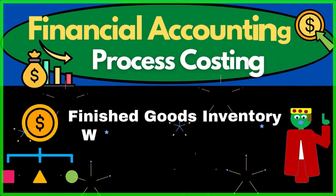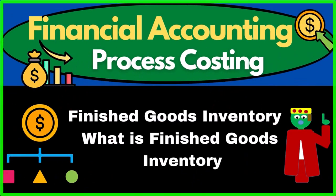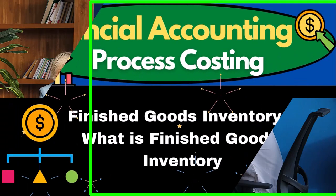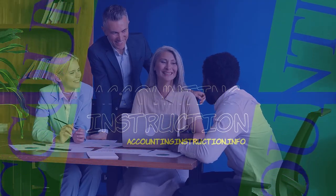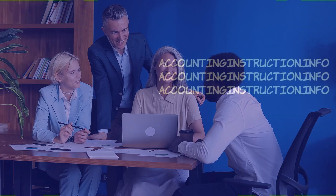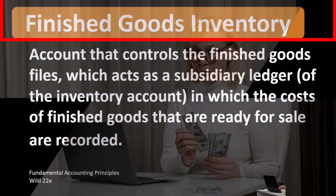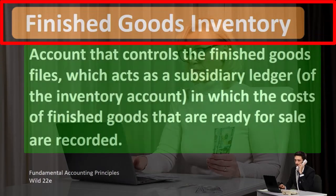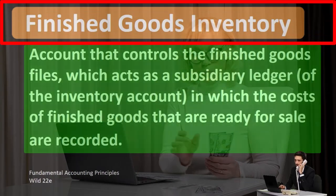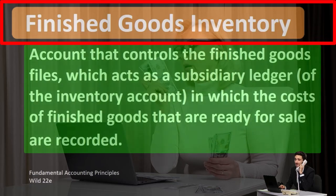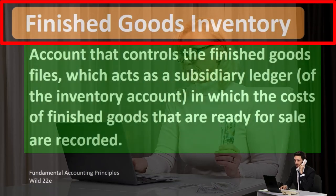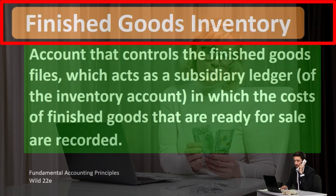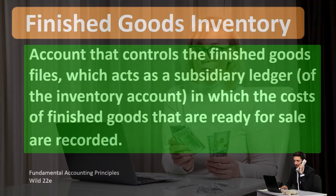Hello. In this lecture we will define finished goods inventory. According to Fundamental Accounting Principles Wild 22nd edition, the definition of finished goods inventory is an account that controls the finished goods files, which act as a subsidiary ledger of the inventory account, in which costs of finished goods that are ready for sale are recorded.